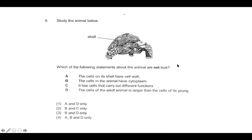Okay, which of the following statements about the animal is not true? So this is a tortoise. The cells on its shell have a cell wall. Well, no, because only plant cells have a cell wall. And this is not a plant cell. The cells in the animal have cytoplasm. Yes, they do. The cytoplasm is where a lot of the chemical reactions will take place. It has cells that carry out different functions. Yes, that's true. Because it's a complex organism, it needs cells that can do different things. The cells of the adult animal is larger than the cells of its young. No, it's not necessarily that they're larger. It's that they have more cells as you get older. So the ones that are not true are A and D. The answer is one.